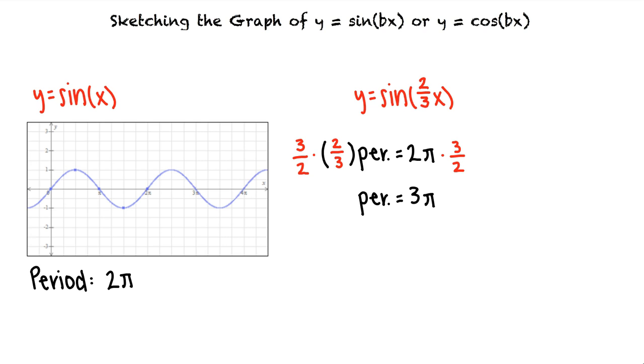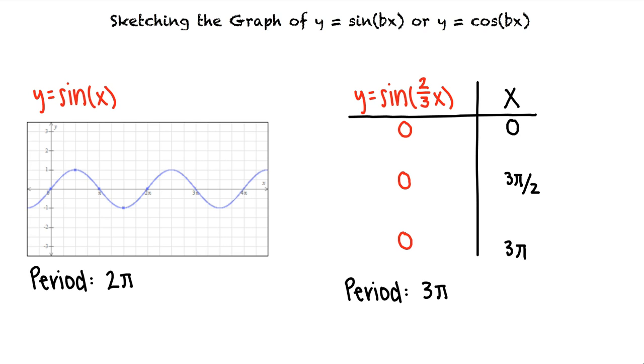This tells us that the graph crosses the x-axis at 0, 3 pi, and halfway between these two points which is at 3 pi halves. The graph will be at a maximum of 1 at the midpoint between the first two x-intercepts and the graph will be at a minimum of negative 1 at the midpoint between the second two x-intercepts. We see that these values are the same ones we found using the first method and the resulting graph is the same as well.